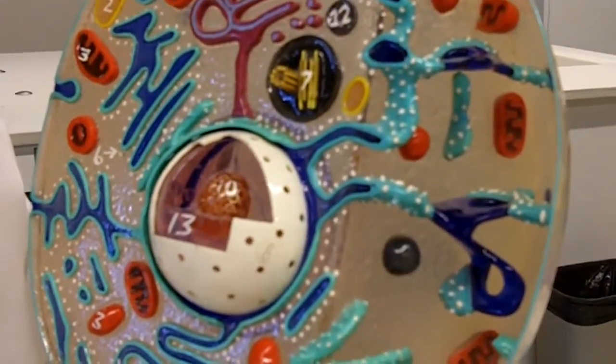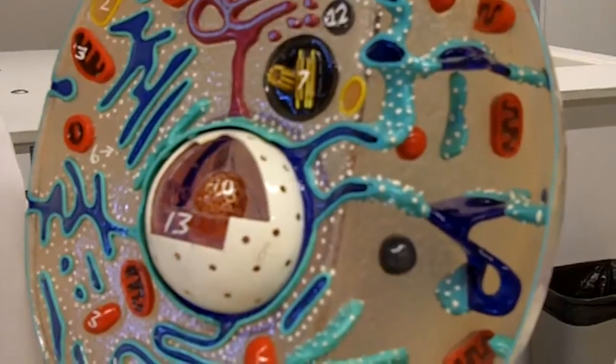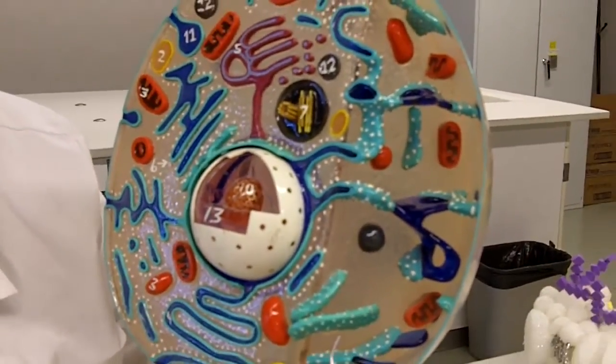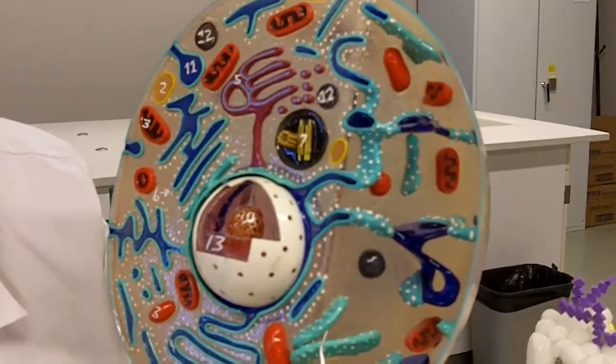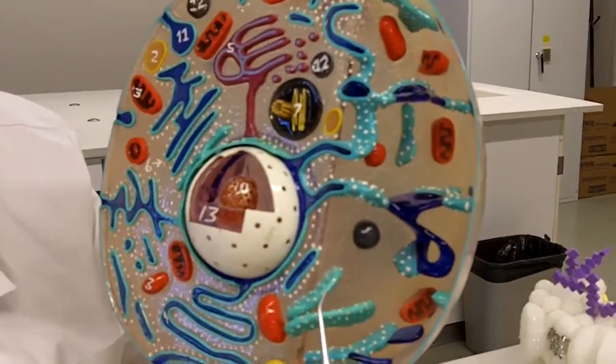Organelles are the scenery of the cell. They have a job to do. They're permanent structures. They may change in number, but they're permanent structures. The inclusions can come and go. They may be stored things like melanin or glycogen.